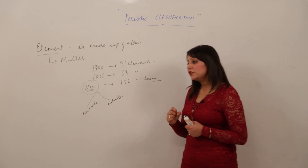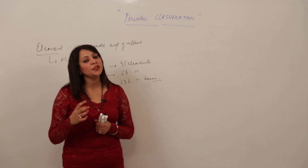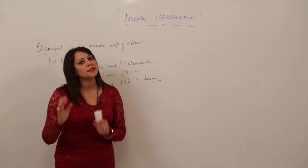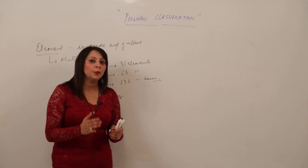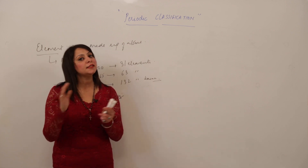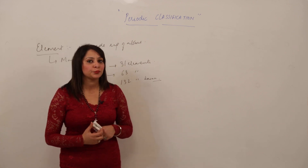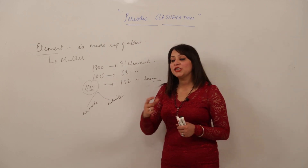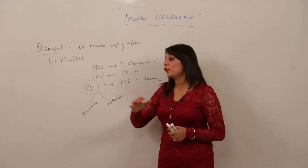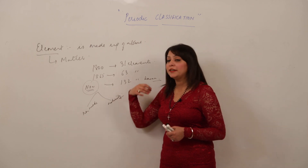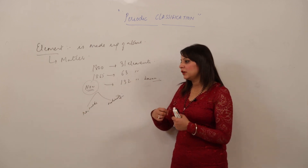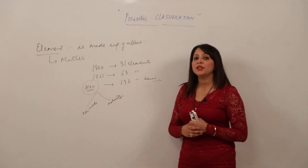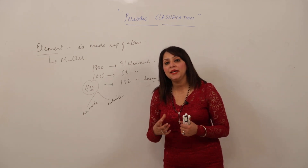To make the study easier, we need a classification. Classification means to make the study systematic — grouping similar elements together and separating them from dissimilar ones. This is useful because we can look at the property of one element and get an idea of all the properties of elements that resemble that particular element.